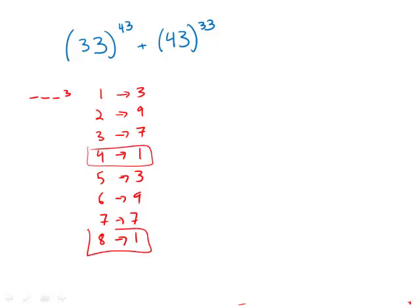So what this means is that for 33 to the 43, the closest multiple of 4 is 44. 33 to the 44 would have a units digit of 1. And if we step back one from that to 33 to the 43, we go back up one in the pattern, so that's going to have a units digit of 7.